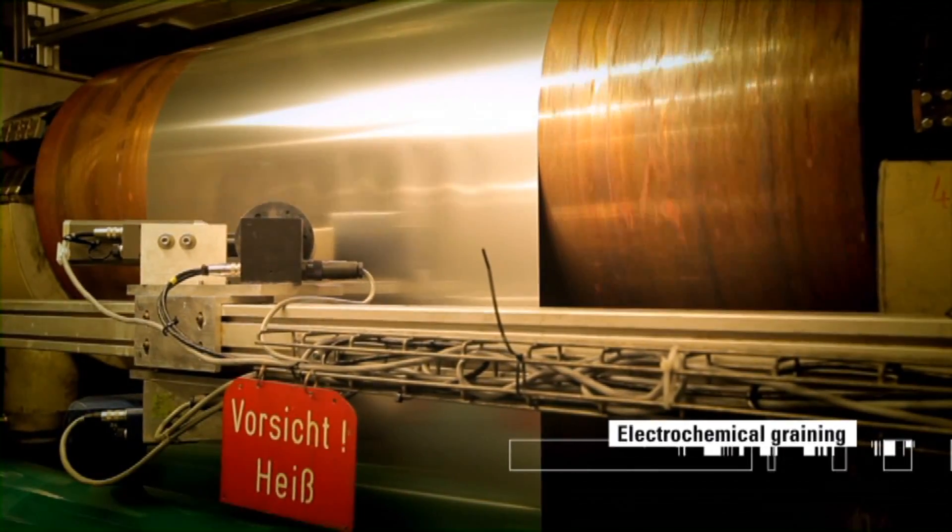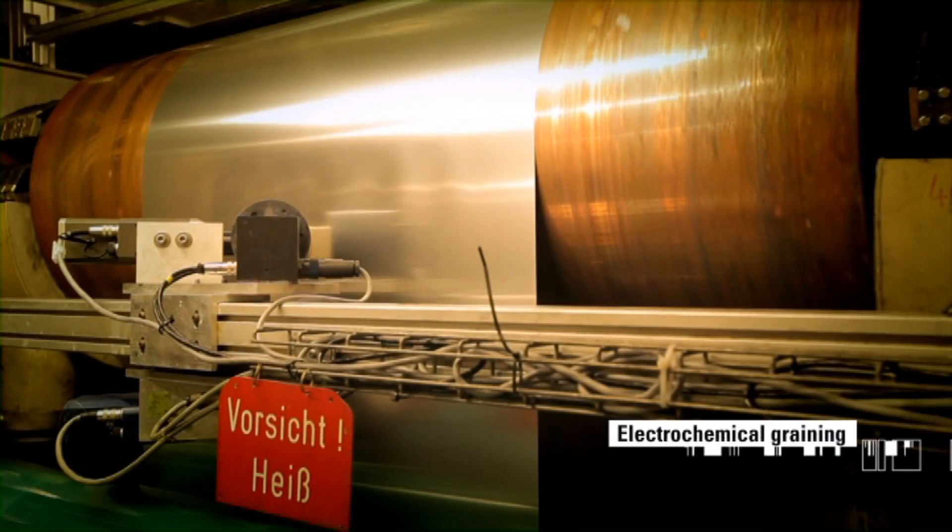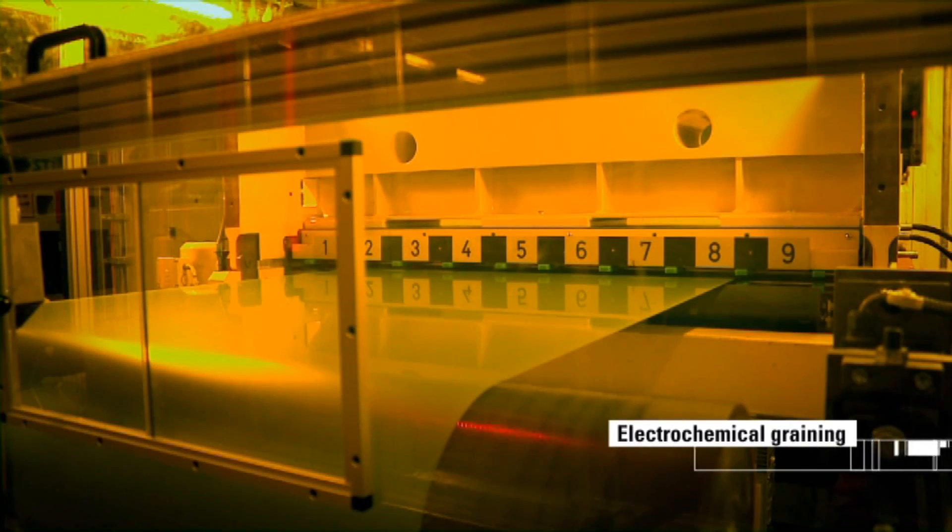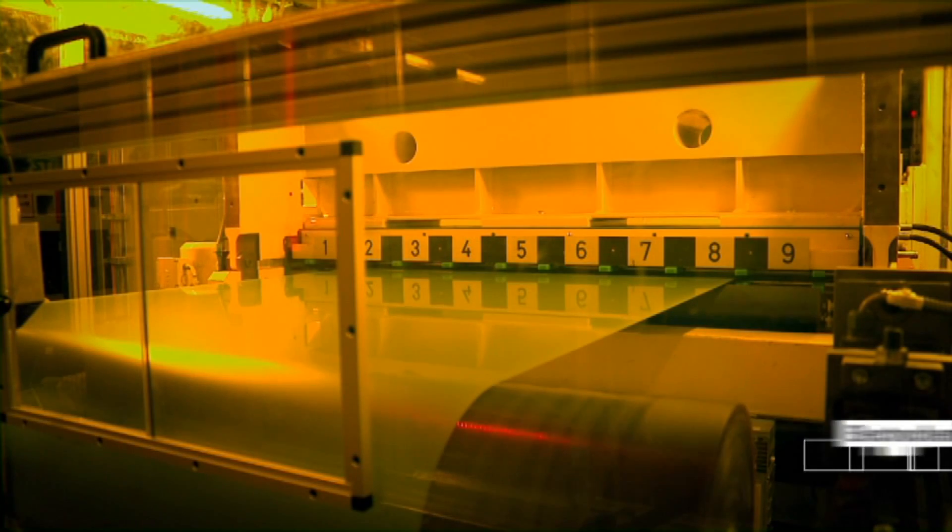The graining process follows. At this stage the surface is roughened via an electrochemical treatment. Graining is necessary to ensure the perfect lithographic behavior of the printing plate.